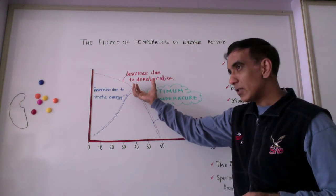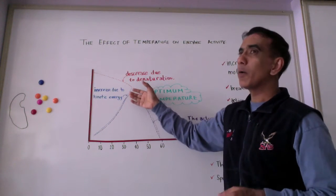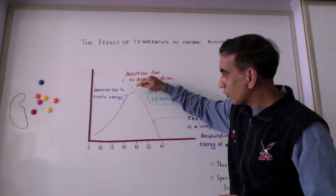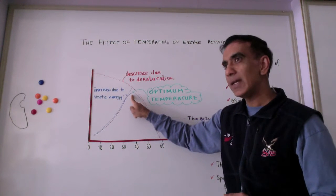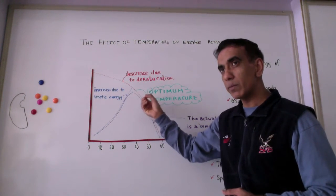And once this denaturation is significant to overpower the effect of the increased molecular motion, then that critical point comes where the enzyme works at its fastest. It's called the optimum temperature.